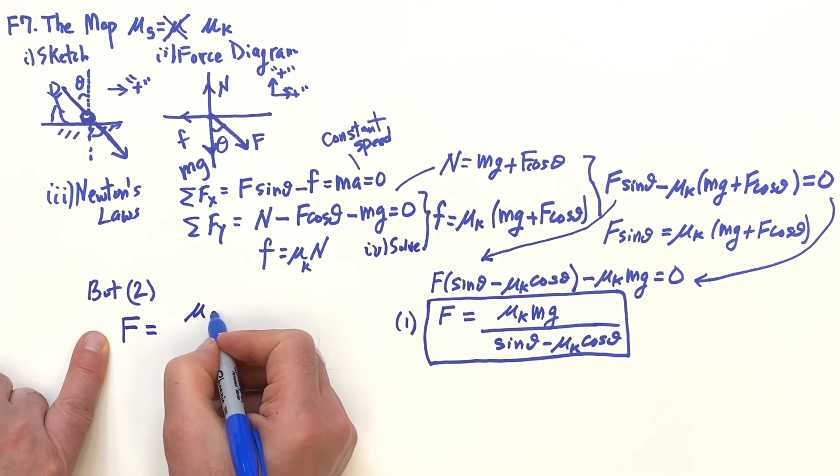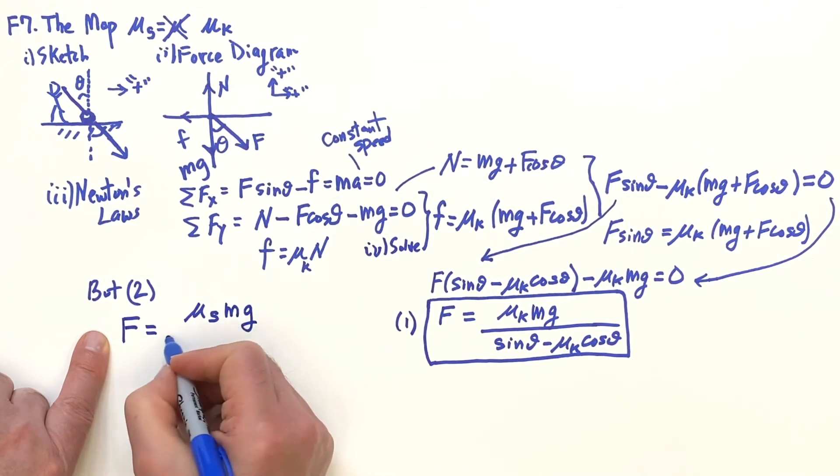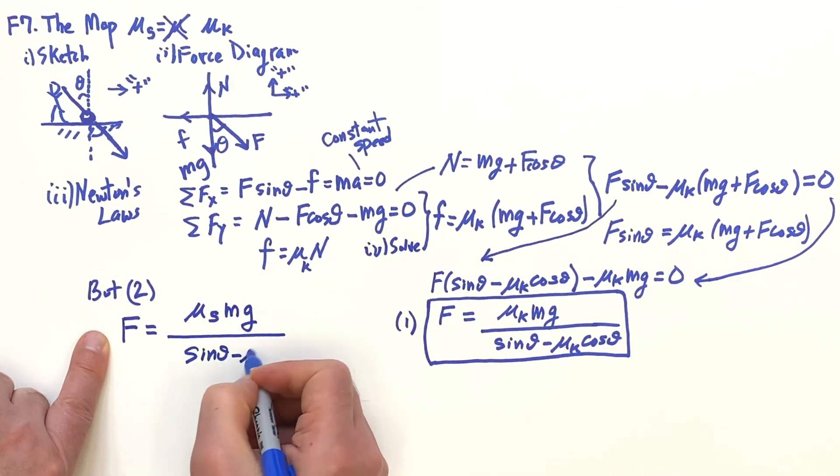For step two, I had the same equation but now we're talking about static. We have static, so we have the s: μ_s mg, μ_s, sin θ minus μ_s cos θ.